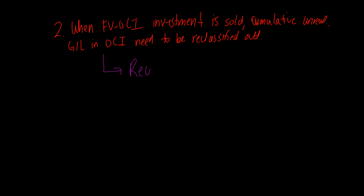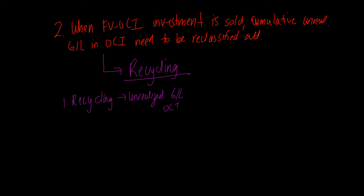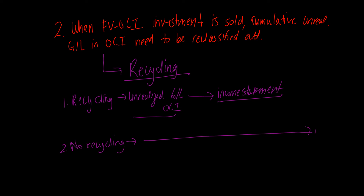Recycling is also a unique concept to the fair value OCI model. If the company follows recycling, the unrealized gains and losses from OCI are going to be recognized on our income statement or statement of comprehensive income. We already recognized the unrealized gains and losses in OCI, and now we're going to recognize them again in the income statement — hence the concept of recycling. If there is no recycling, the unrealized gains and losses skip the income statement and go straight to retained earnings, rather than flowing through the income statement first.